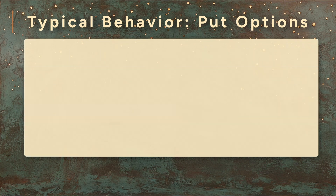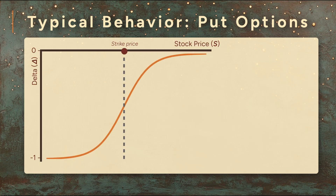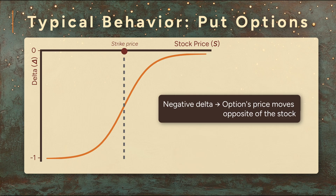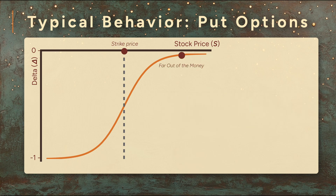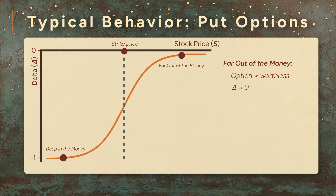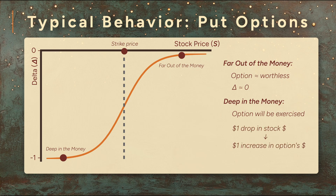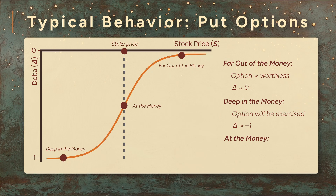Put options work the same way but in reverse. Their deltas range from negative 1 to 0. A negative delta means the option's price moves in the opposite direction of the stock. A far out-of-the-money put — with the stock price way above the strike — is almost worthless, and a one dollar move doesn't change that. Its delta is near zero. A deep in-the-money put, with the stock price way below the strike, is almost certain to be exercised and moves one-for-one inversely with the stock. If the stock drops one dollar, the put's value gains almost one dollar — its delta approaches negative one. An at-the-money put has a delta around minus 0.5, so a one dollar up move in the stock causes a 50 cent drop in the put's price.